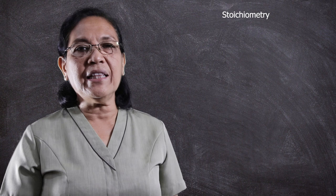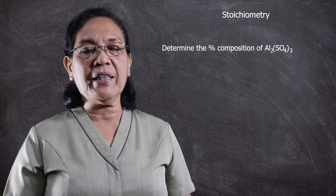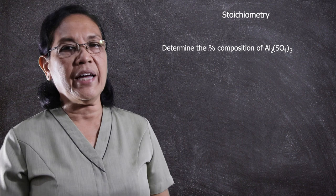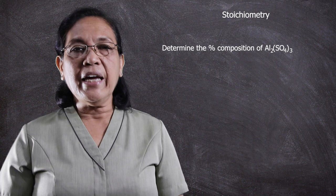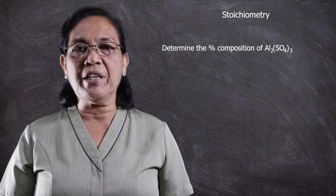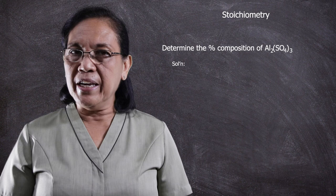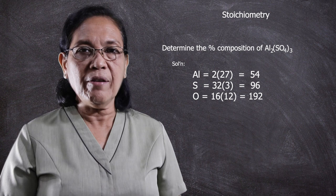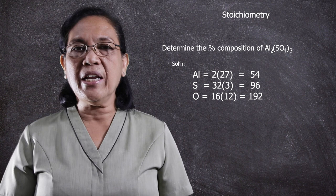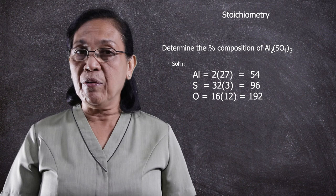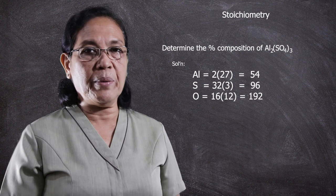Another example is that of aluminum sulfate. Looking at aluminum sulfate, there are three atoms composing it: aluminum, sulfur, and oxygen. For aluminum, there is a subscript 2, and for the polyatomic ion, which is the sulfate, it is enclosed in a parenthesis with a subscript of 3. So when you are going to compute for the number of atoms in aluminum sulfate, for aluminum it has to be multiplied by 2. For sulfur, it has to be multiplied by 3, and oxygen is to be multiplied by 12, because there is already a subscript of 4 for oxygen, then multiply it by 3, so it becomes 12.